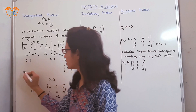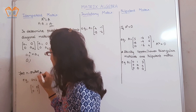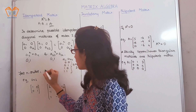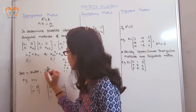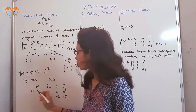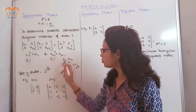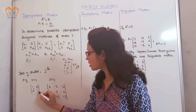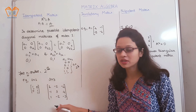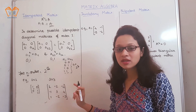We can generalize: for an n-order matrix, the number of possible idempotent diagonal matrices is 2 raised to n. As an example for a 2×2 matrix, we consider the combination of A₁₁ and A₂₂ as (1,1). We also have a generalized example of a 3×3 matrix. If you multiply this matrix by itself, the result will be the same matrix.